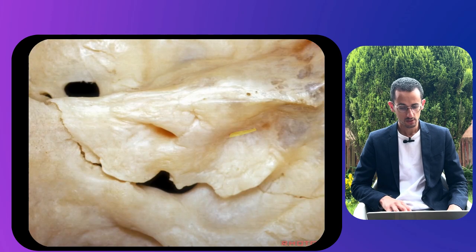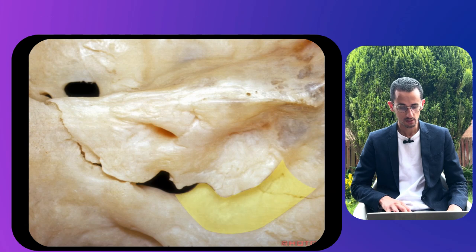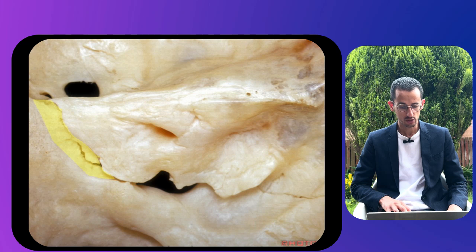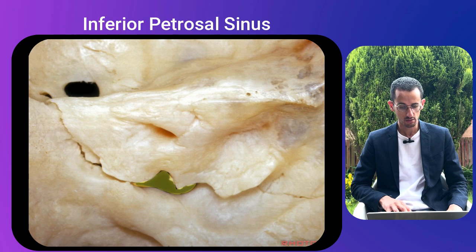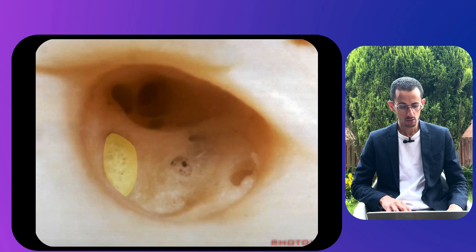Additional structures in the orbit include the orbital process of the palatine bone, the posterior ethmoidal foramen, the sphenoethmoidal suture, the superior orbital fissure, and the zygoma. The structures of the orbit are quite complex and derive from different parts of the skull. In the next image: the hiatus of the endolymphatic sac, the hook of the sigmoid sinus, the inferior petrosal sinus, the jugular foramen, and the porus of the internal auditory meatus.